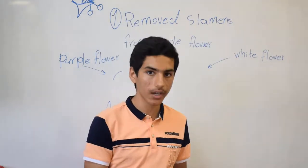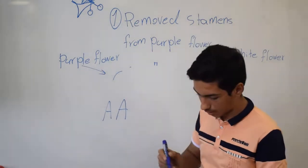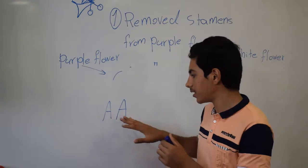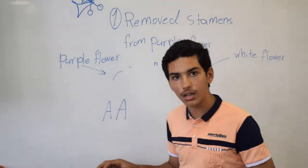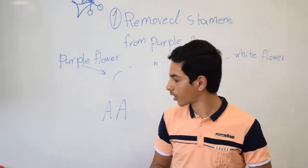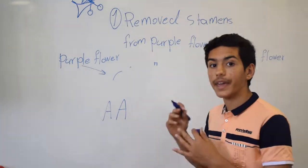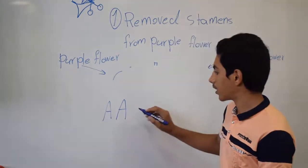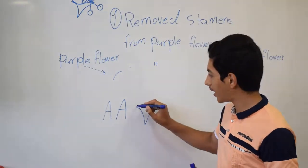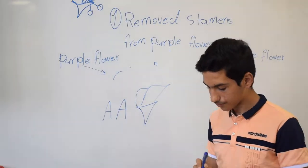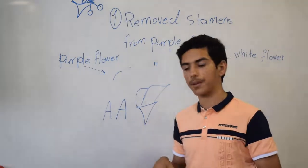For example, we have a double dominant allele genotype for the pea plant. Capital A is a dominant allele, and both are dominant alleles. This plant does not have any problem, and because there is no problem in this genotype, this genotype produces a phenotype — a plant that has a purple flower.